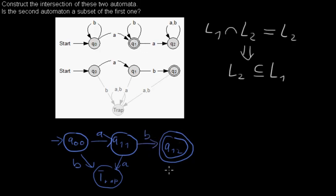From q1,q1, with any letter I will go to the trap state. And that's the whole intersection.